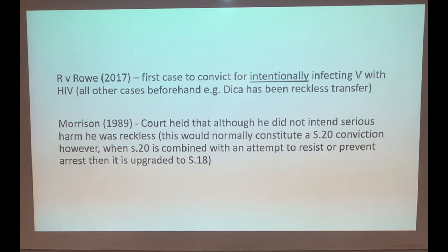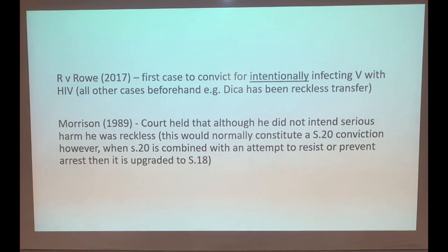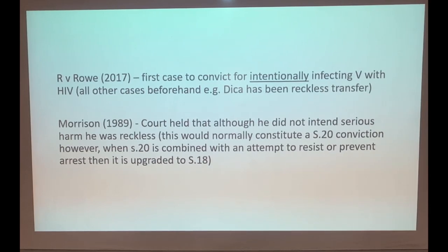Roe (2017) was the first case in this country to convict for intentionally infecting victims with HIV under Section 18 - all previous cases such as Dica had involved reckless transfer. In Roe, it could be proved he intended to do serious harm by wanting to infect people with HIV. Morrison established that if someone commits a Section 20 GBH combined with resisting or attempting to prevent arrest, it can be upgraded to Section 18, based on the principle of protecting police officers in the line of duty.